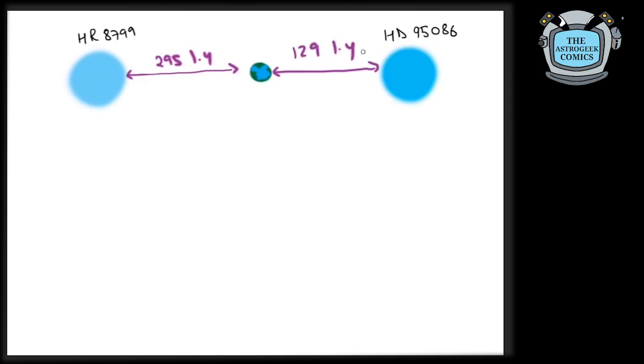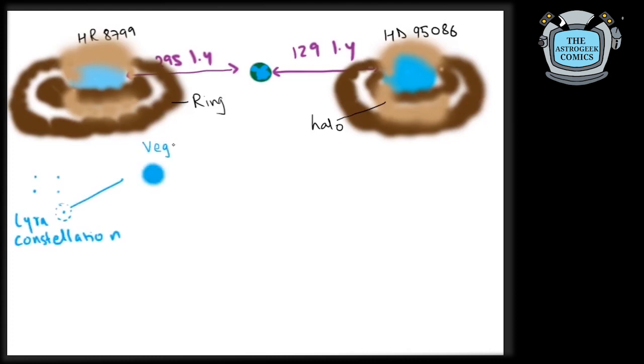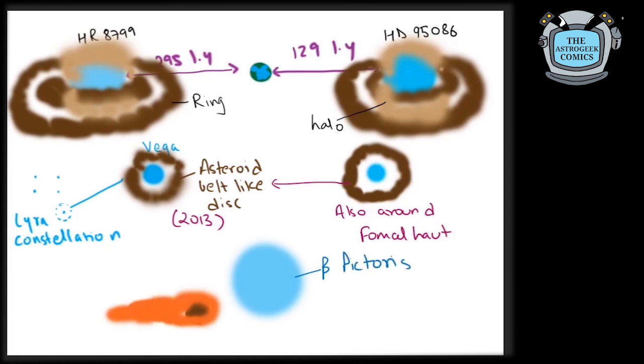NASA's Spitzer and European Space Agency's William Herschel Space Telescope found that the stars HR 8799 and HD 95086, located 295 light years away and 129 light years away respectively, have two dust rings and a halo of dust around them. A study by University of Arizona's Kei Tsu and others found asteroid belt-like disks around Vega and also around Fomalhaut in the year 2013. In fact, it isn't just planets we have discovered. We have also made a candidate discovery of an exocomet around the star Beta Pictoris.